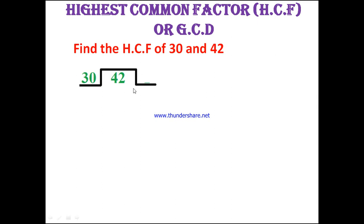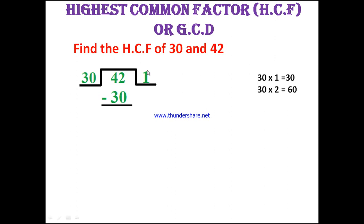From the two numbers, let's take the greater number as dividend and the smaller number as divisor. In 42, how many times does 30 go? One time. We write 1 in the quotient place. 1 times 30 is 30 — we write the product down and subtract, getting remainder 12.